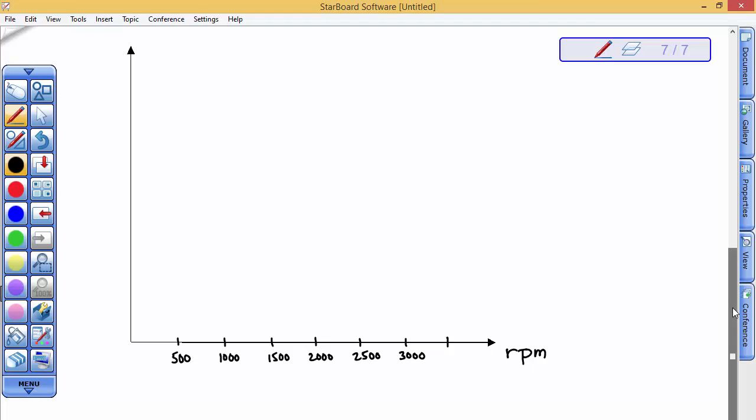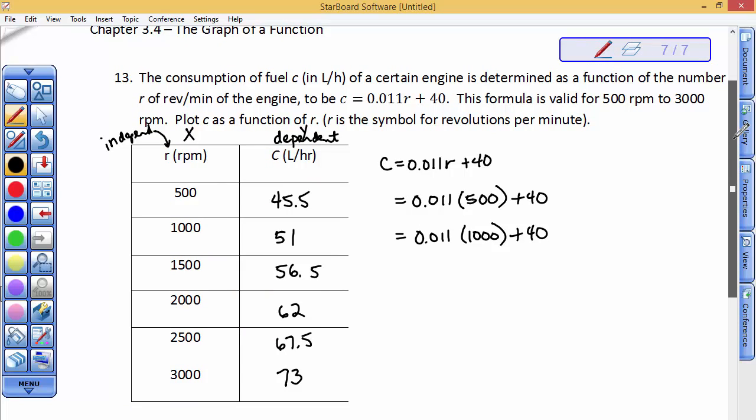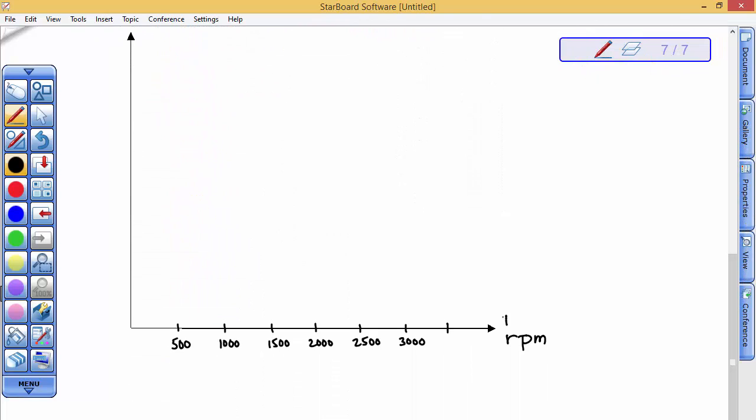You can write revolutions per minute if you want there, but you must tell me what the units are that the x-axis describes. On the y-axis we have consumption, and I believe that was in liters per hour. I'm going to go ahead and write that, liters per hour. So you must describe your y-axis.